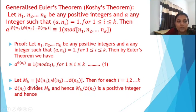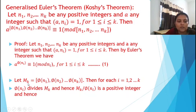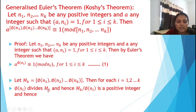Take mₖ equal to lcm of φ(n₁), φ(n₂), ..., φ(nₖ). Then for each i = 1, 2, ..., k, φ(nᵢ) divides mₖ. Since all φ(nᵢ) divide mₖ, the quantity mₖ divided by φ(nᵢ) is a positive integer.